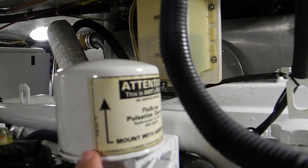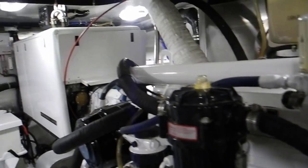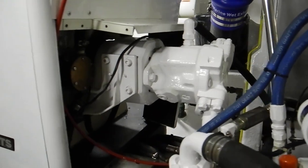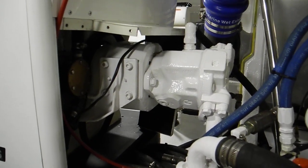This is a flow scan pulsation dampener. You've got a flow scan fuel flow meter. Generator back here on the port side. And this is the hydraulic pump for the bow thruster and the anchor windlass.